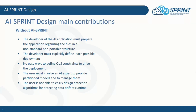The design of an AI-based application to be deployed in the computing continuum is not an easy task without AI Sprint. The developer of the AI application must provide the implementation of the components as well as the configuration files in a non-standard and non-portable structure. Each possible deployment must be explicitly defined in the case of alternative implementation of the components with degraded accuracies and multiple candidate resources. There are no easy ways to define quality of service constraints to drive the deployment, and the user must involve AI experts to provide partitioned models. Finally, there are no automatic ways to design detection algorithms for detecting data drift at runtime.